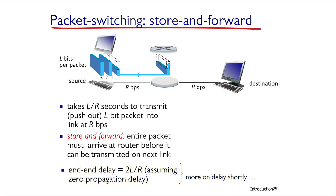If we generalize the case for two routers on the route between sender and receiver, we'll get 3L over R. And in the general case of K routers, we'll get (K+1) times L over R.